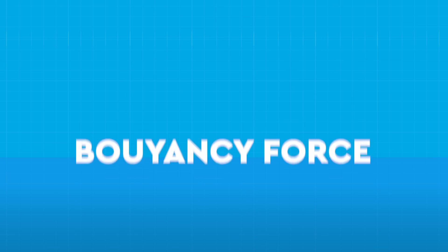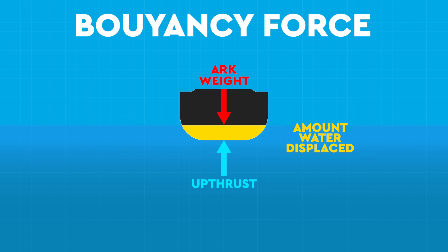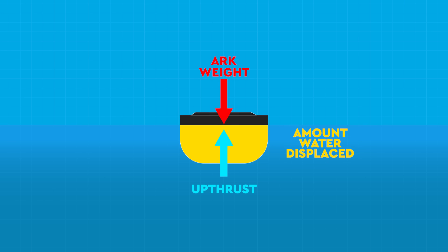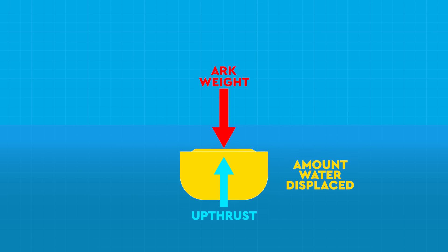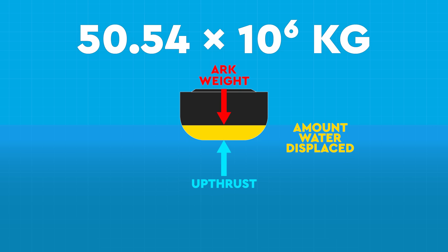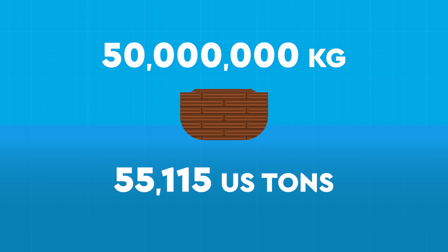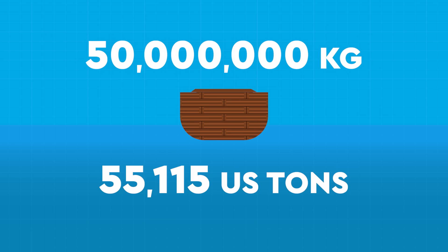For this, we need to know the ark's buoyancy force, which, according to Archimedes' principle, is equal to the weight of the volume of water the ark displaces. The University of Leicester study could then estimate the total mass the ark could support before gravitational weight would overcome the buoyancy force and sink the ark. This was calculated as 50.54 times 10 to the power 6 kilograms. In other words, the ark could house 50 million kilograms or around 55,000 US tons of cargo without any trouble. I think we can all agree that's a big load.